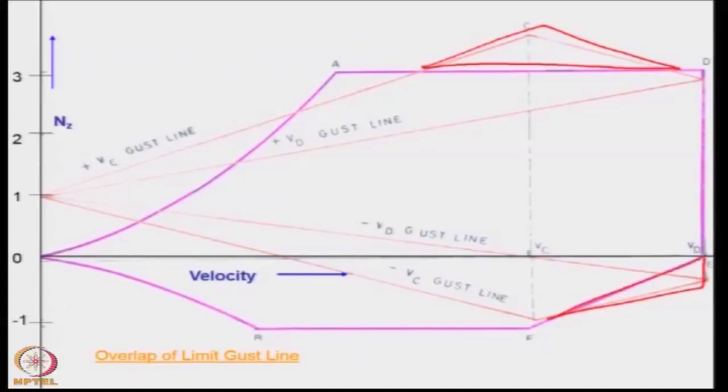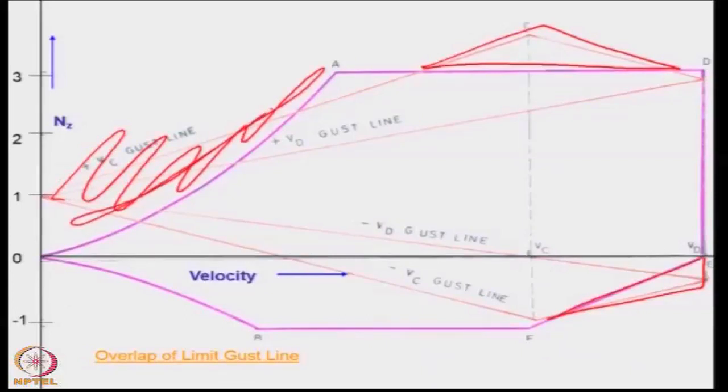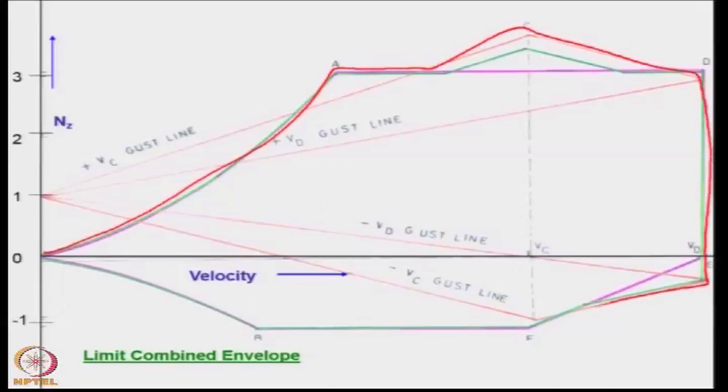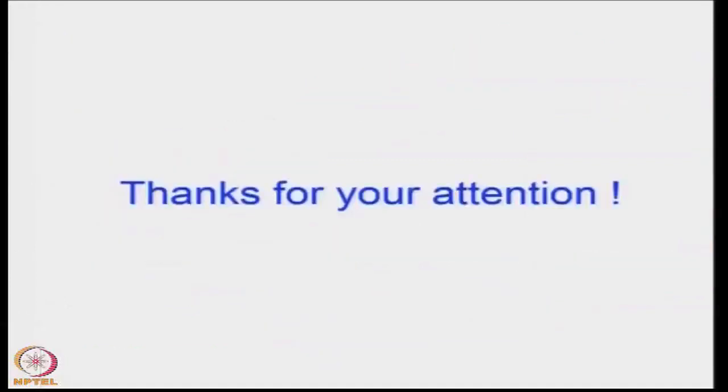In other words, now this area you cannot fly because this area falls below the stall. So if you now look at the combined envelope, it will actually follow the outer contour of the VN diagram and you will get the limit combined envelope. Thanks for your attention.